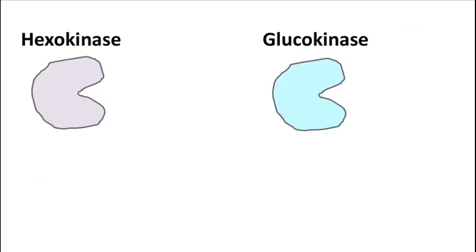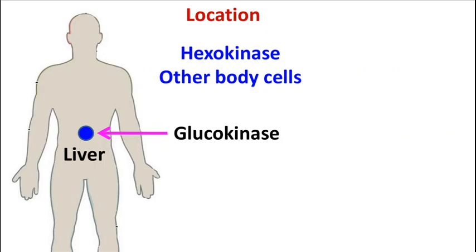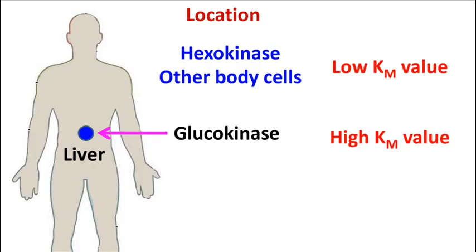Let's understand this with an example. Hexokinase and glucokinase are isoenzymes that phosphorylate glucose to glucose 6-phosphate. Both hexokinase and glucokinase have different localizations. Besides the difference in localization, they have different Km values. The Km value for hexokinase is low, while the Km value for glucokinase is high.